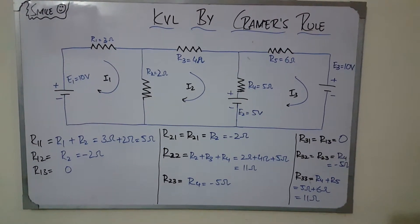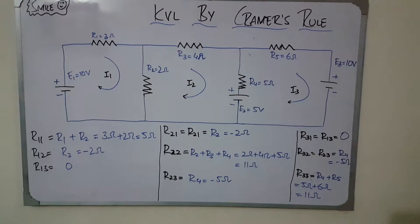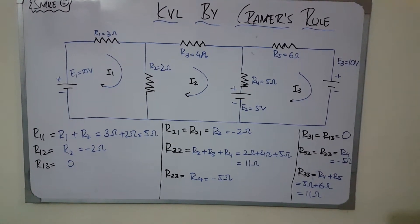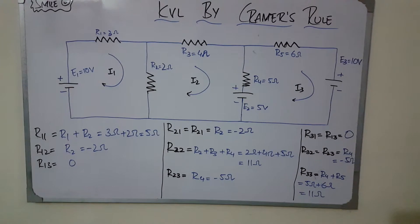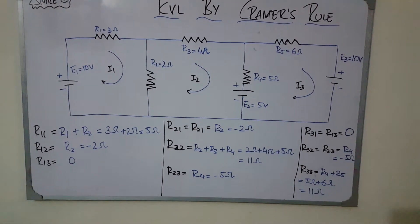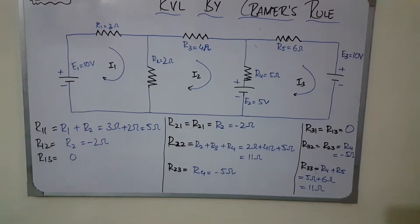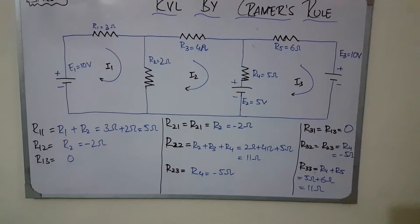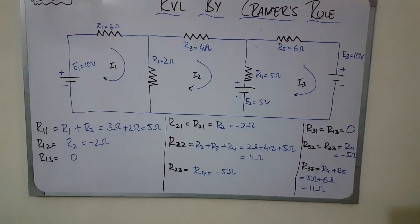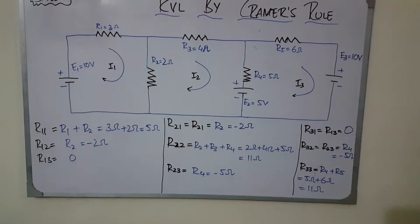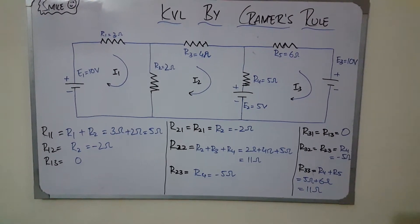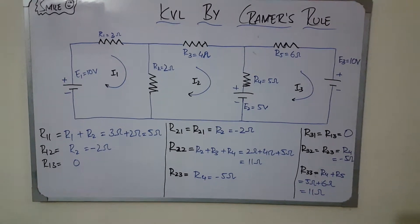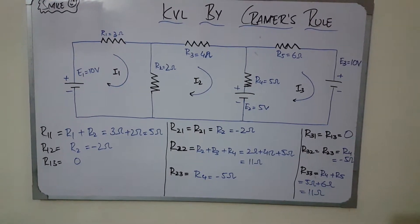R12 means the common resistor between loop one and loop two. There is one common resistor between loop one and loop two, that is R2, and that value is put in with a negative sign. R13 is the common resistor between loop one and loop three — there is no common resistor, so it becomes zero.